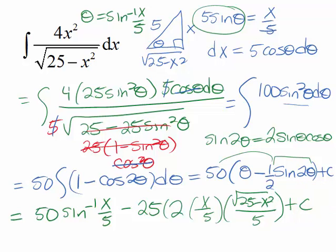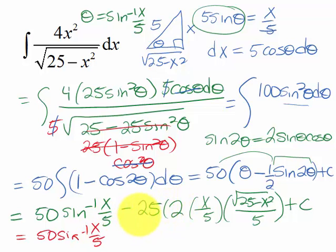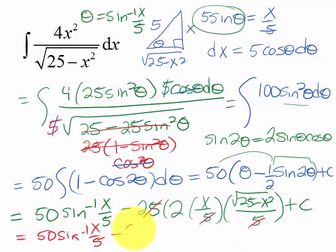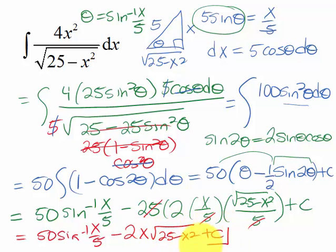Doing a little simplifying to get the final answer: we have 50 times inverse sine of x over 5, then multiplying through — with two factors of 5 in the denominator — gives minus 2x times the square root of 25 minus x squared, plus a constant.